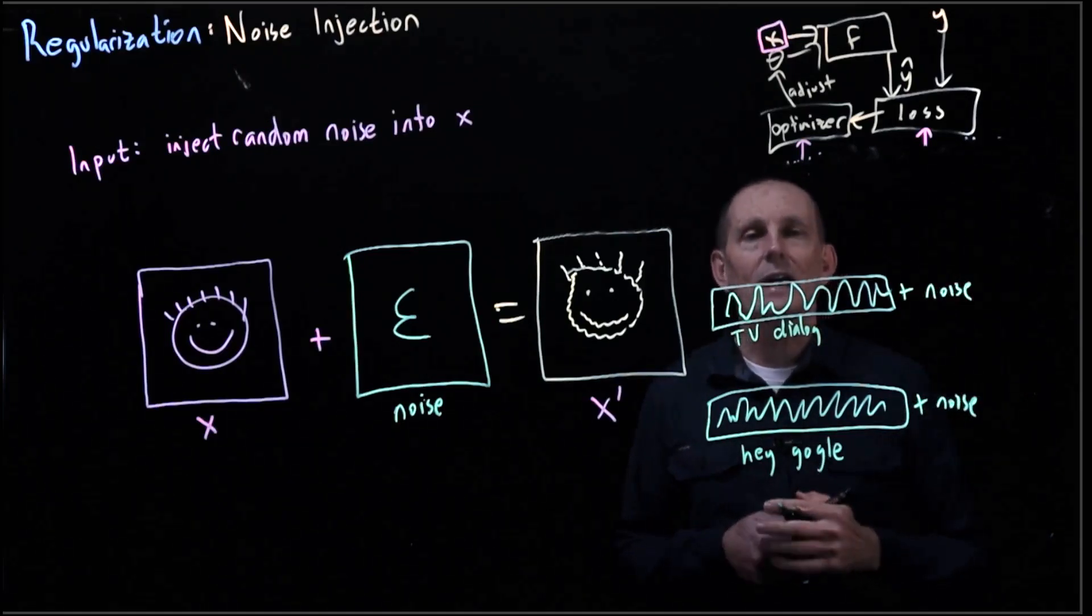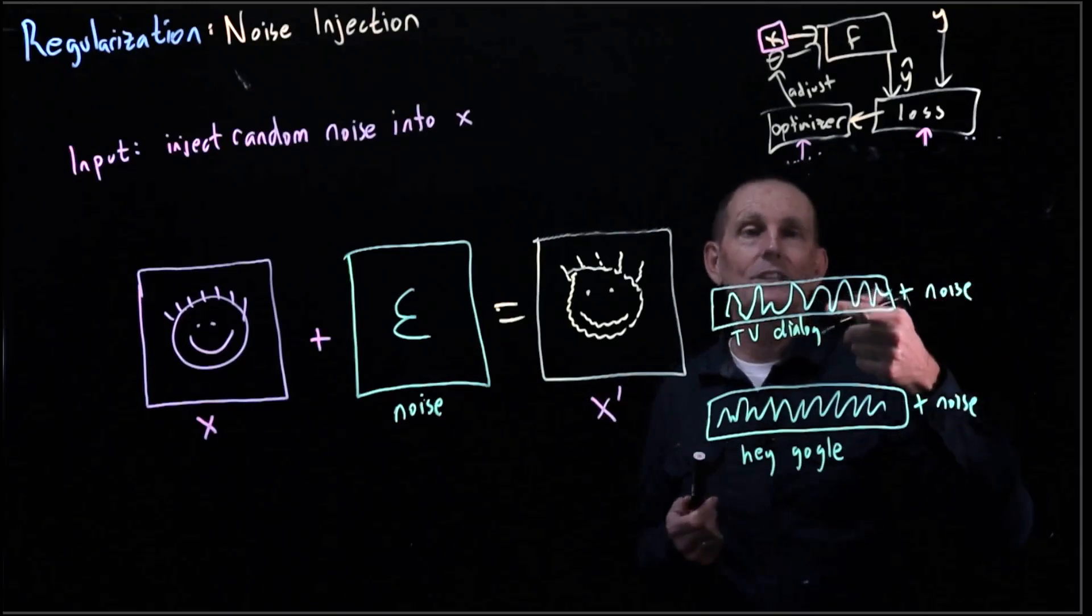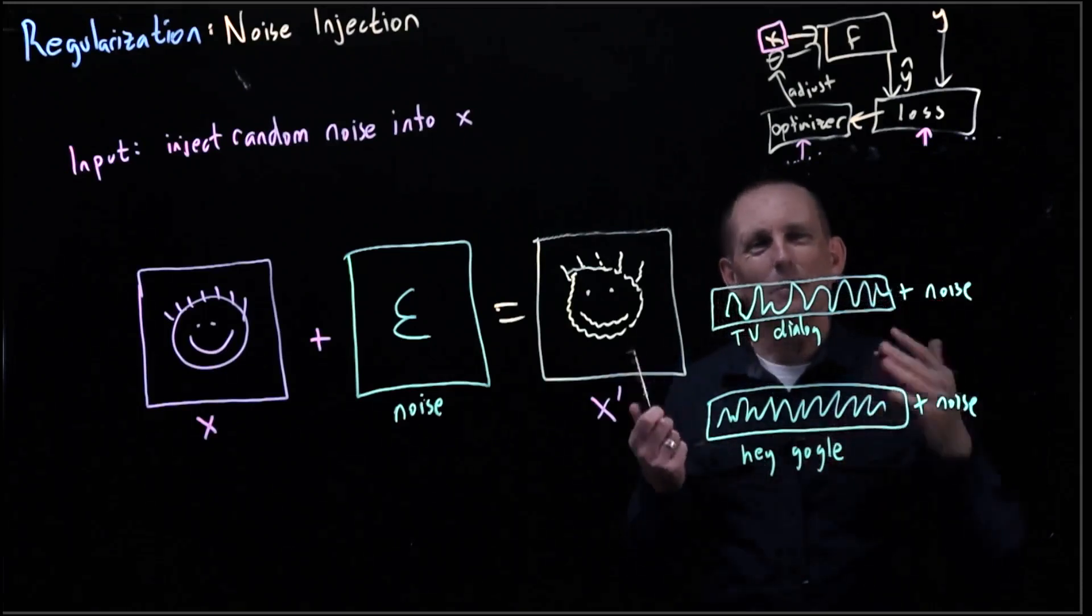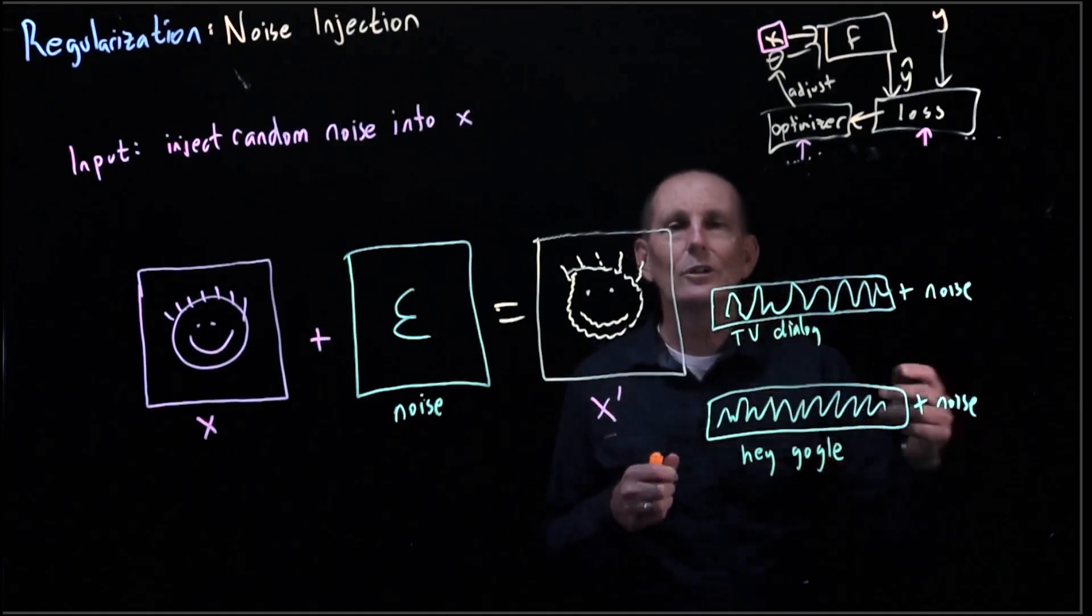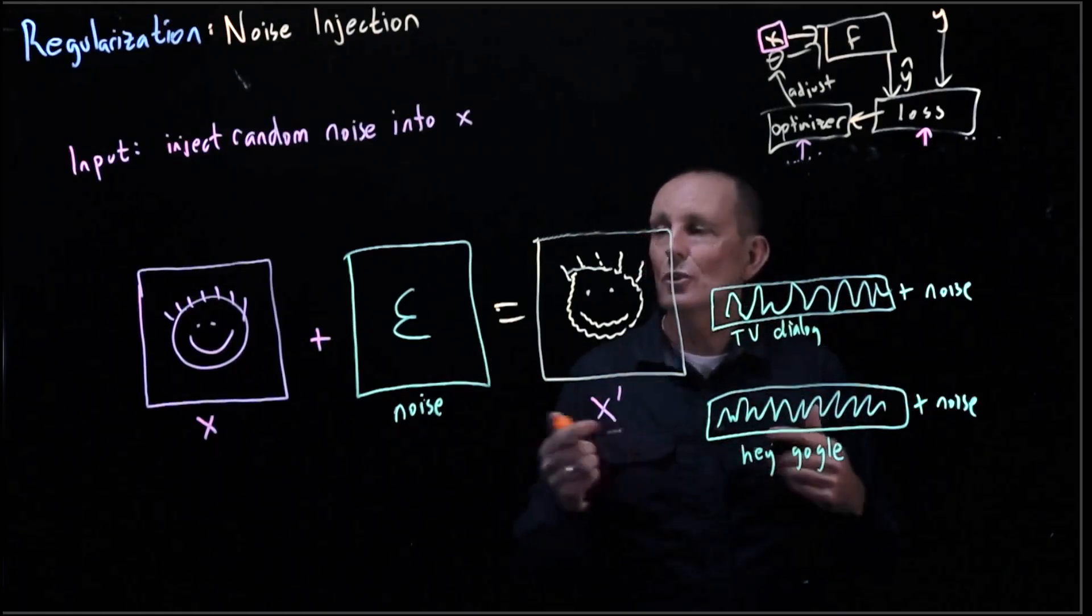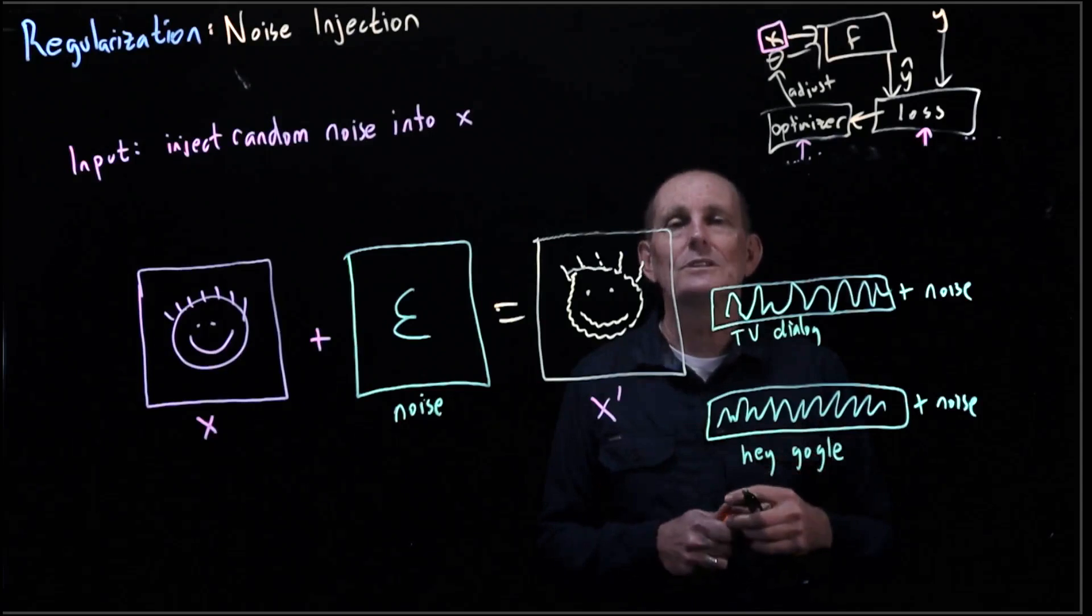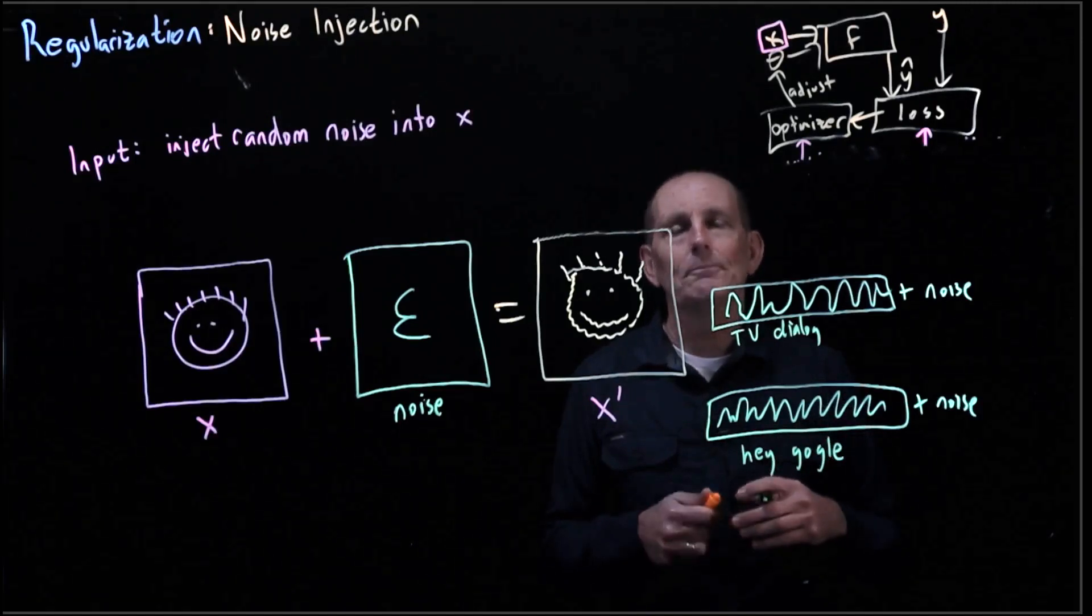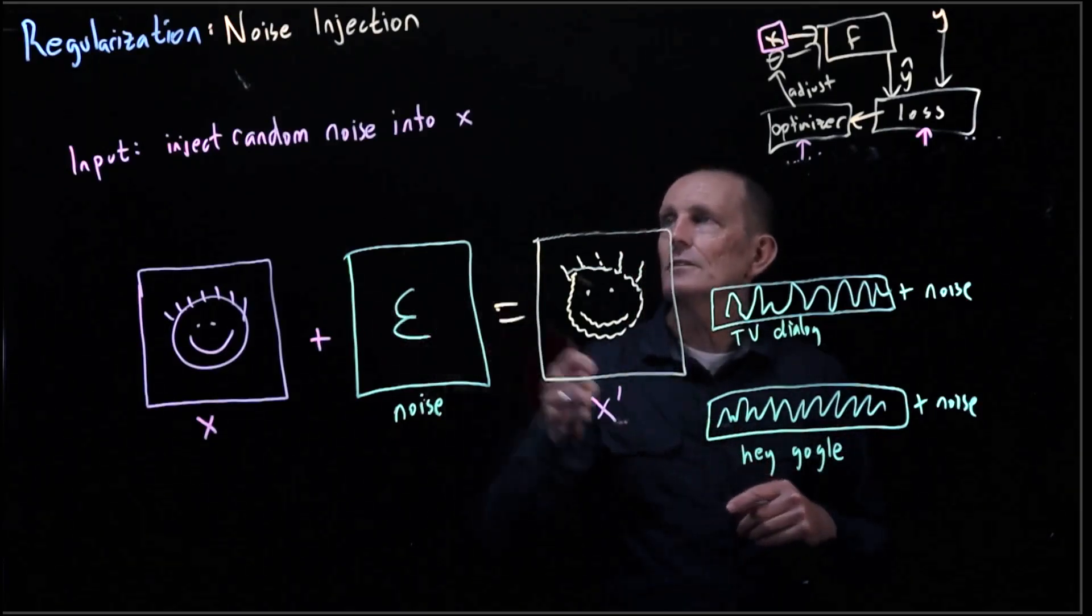Or maybe we're going to add in not just noise, maybe we're going to add in something that is, we could add in, let's say, a dog barking. Because we might have a dog barking over TV dialogue in real life, and we might have a dog barking over hey Google in real life. I'd consider that more like data augmentation though, where we're actually taking some data that's there, like a nice hey Google waveform, and adding in some not random noise. So noise injection would say we add in random noise. Data augmentation would say we add in a dog barking, or doorbell ringing, or the lawnmower running, things like that. So this is the random noise injection.